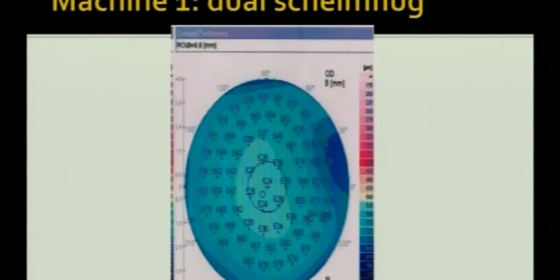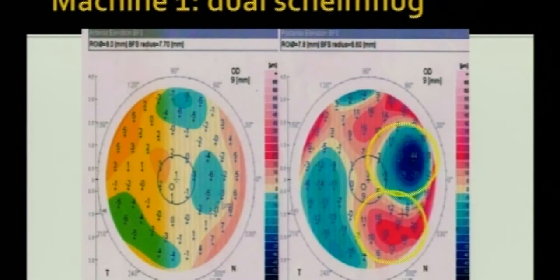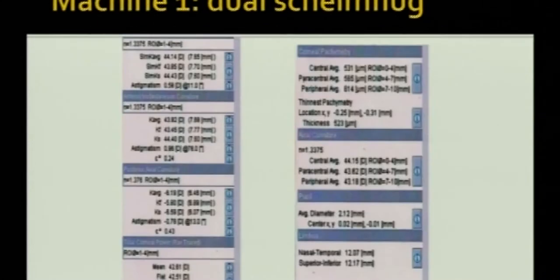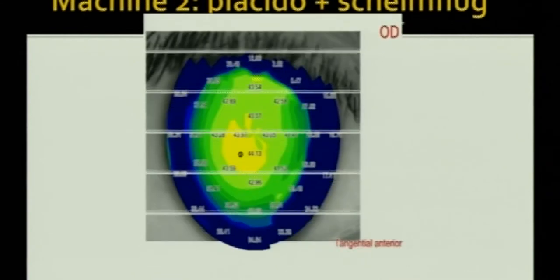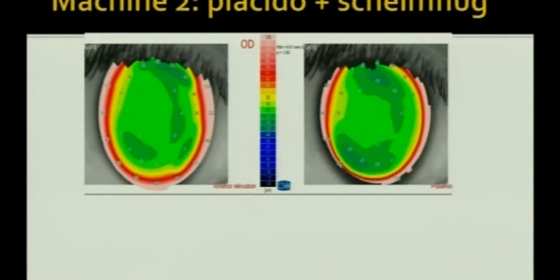The second machine (Sirius) showed a pachymetry of 499, while the first (Galilei) showed 531 — remember the refractive error is around minus 6. The surface appeared normal on Sirius with no elevation on anterior or posterior maps. A Placido scan showed everything normal, with aberrations of 1.4 and 1.1 — fairly acceptable. So one machine showed an irregular cornea, the Scheimpflug-Placido showed thin but regular, and Placido showed regular. We planned a LASIK Xtra for this patient.